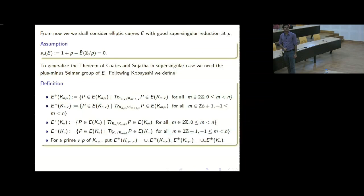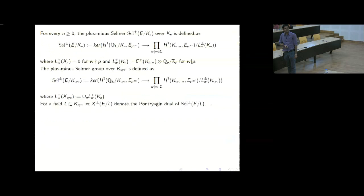Now consider an elliptic curve E with good supersingular reduction at P over Q, with the condition a_P = 0, which is required for most of the results of Kobayashi, Kurihara, and Pollack. There are certain subgroups of rational points of E over local fields at P, and also over global fields. Using these technical definitions, one defines the plus-minus Selmer groups for E with good supersingular reduction at P. One is called plus and one is called minus. They differ from the usual Selmer group only at primes above P.